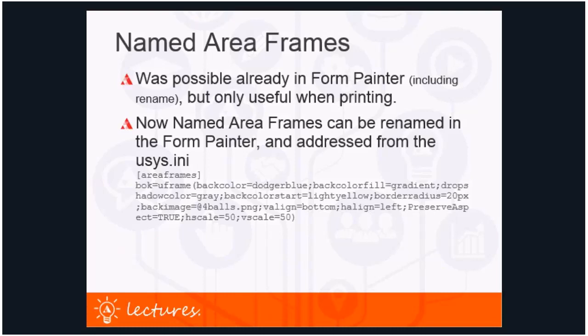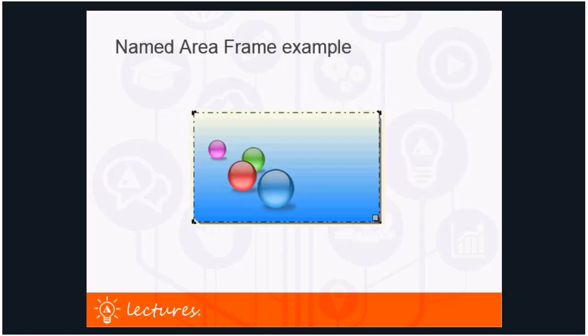Here's an example in the area frame section. The frame is called 'bok' and we're showing the whole range of properties: back color dodger blue, back color fill gradient, drop shadow color gray, back color start light yellow, radius around the edges, a back image called 'four balls dot png', vertical align to the bottom, horizontal align to the left, preserve aspect true, H scale of 50, and V scale of 50. All together this results in a display with gradient, drop shadow, and rounded edges.